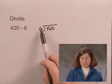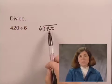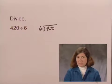So we go to the next digit. Does 6 go into 42? The answer is yes, 6 times 7 is 42.